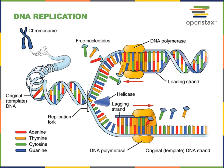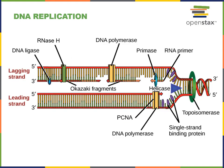Multiple replication bubbles will form simultaneously in one double helix DNA molecule, so there can be hundreds or thousands of replication forks copying DNA simultaneously. There are thousands of origins of replication throughout the chromosome, and at each of these origins a DNA replication bubble is formed, with a replication fork on either end.